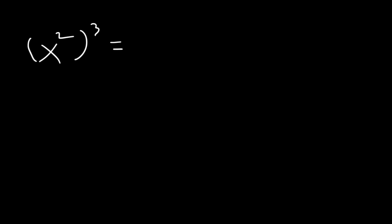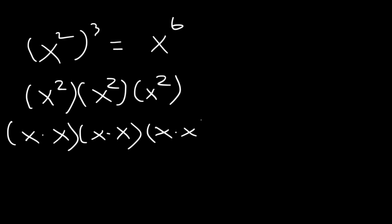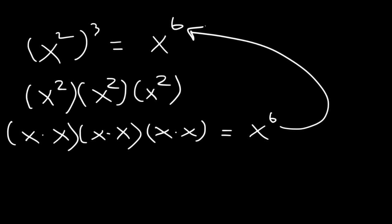Now what about x squared raised to the third power? According to the power rule, when you raise one exponent to another you need to multiply. 2 times 3 is 6. To understand it: x squared raised to the third power means we have three x squareds together, and each x squared is x times x. So we have a total of six x variables multiplied together — that's why it's x to the sixth.